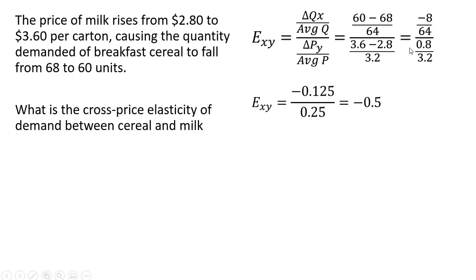So minus 8 divided by 64 is minus 0.125. And finally, 0.8 divided by 3.2 is 0.25.